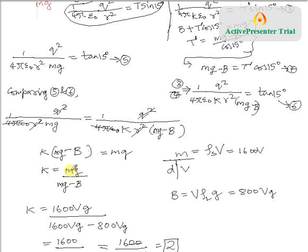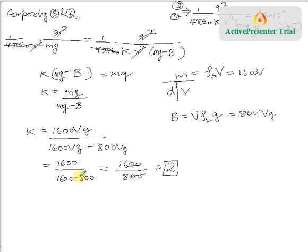We don't know mass or buoyant force directly, but we know the densities. Mass = ρ_solid × V = 1600V. Buoyant force = ρ_liquid × V × g = 800Vg. Substituting: k = 1600Vg / (1600Vg − 800Vg). The Vg cancels, giving k = 1600/800 = 2. So the dielectric constant of the liquid is 2.